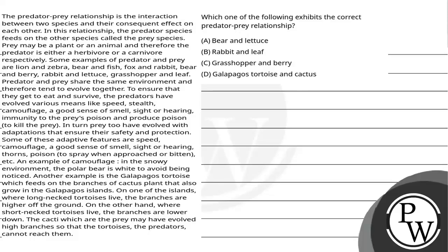Hello, let's read the question. The question says the predator-prey relationship is the interaction between two species and their consequent effect on each other. In this relationship, the predator species feeds on the other species, which is called the prey species. Prey may be a plant or an animal, and therefore the predator is either a herbivore or carnivore respectively.